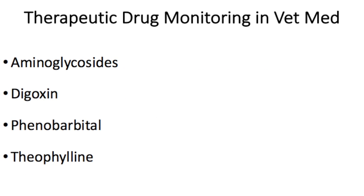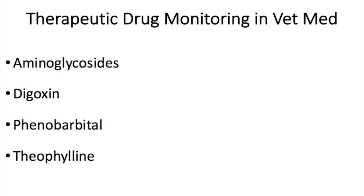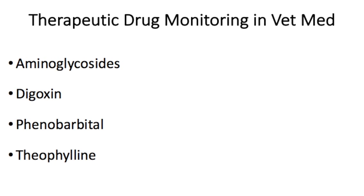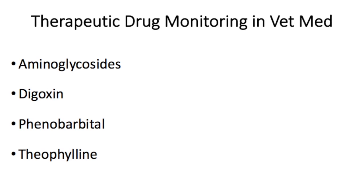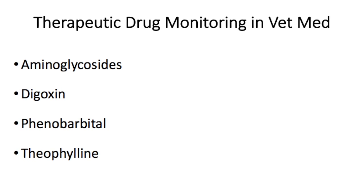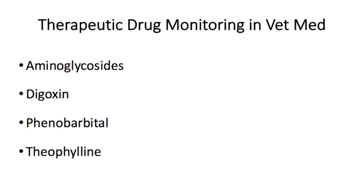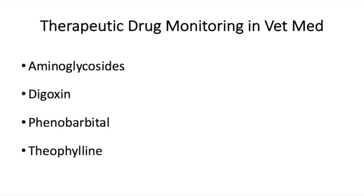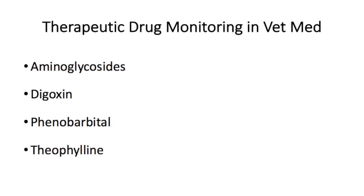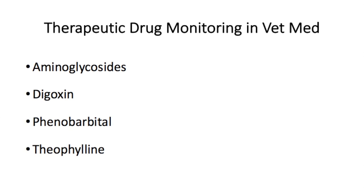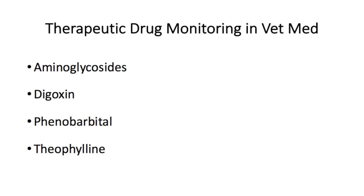There are four drugs that are commonly monitored for plasma drug concentrations in veterinary medicine, and these are aminoglycosides like gentamicin or amikacin, digoxin, phenobarbital, and theophylline.